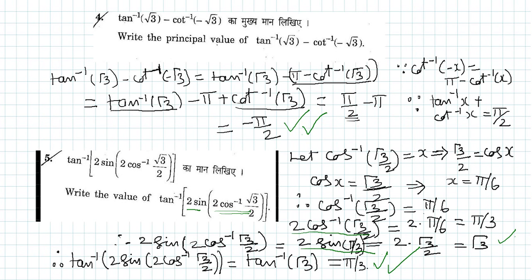Let us substitute the value pi by 2, and there is a minus pi already. So pi by 2 minus pi gives us the principal value of the given expression as minus pi by 2.